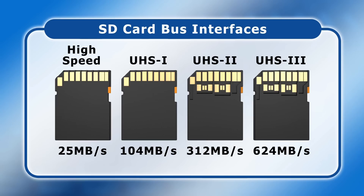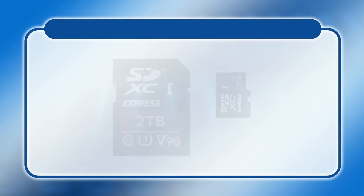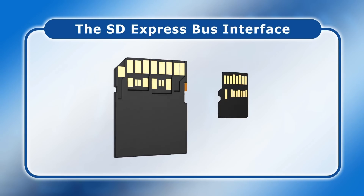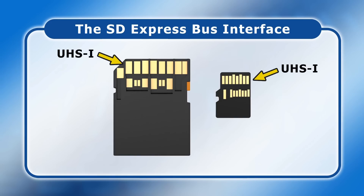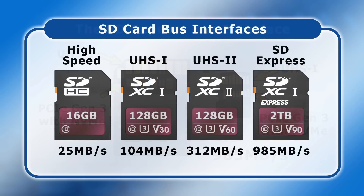Although the faster UHS-3 standard, which uses the same pinout, was announced in February 2017, UHS-3 cards and devices have either not made it to market or are exceedingly rare. UHS-3 is now also very unlikely to go mainstream as in June 2018 a new standard was announced called SD Express. This will again have two rows of pins, with the upper one maintaining a UHS-1 bus interface for backwards compatibility and the lower row offering a PCIe Gen 3 bus interface with NVMe protocols, promising a maximum data transfer speed of 985 MB per second. SD Express cards will therefore be able to be used in place of regular SSDs, with potentially major implications for single board computers and IoT devices.